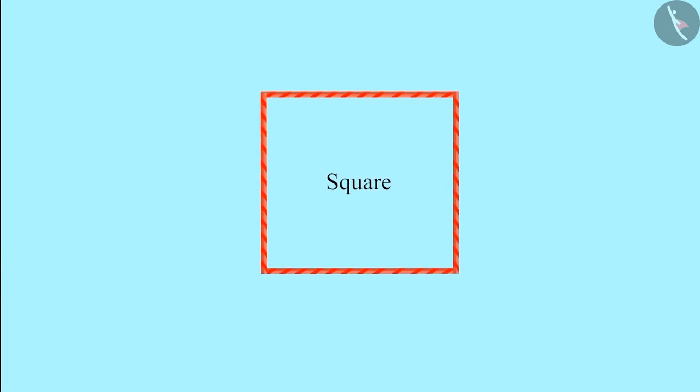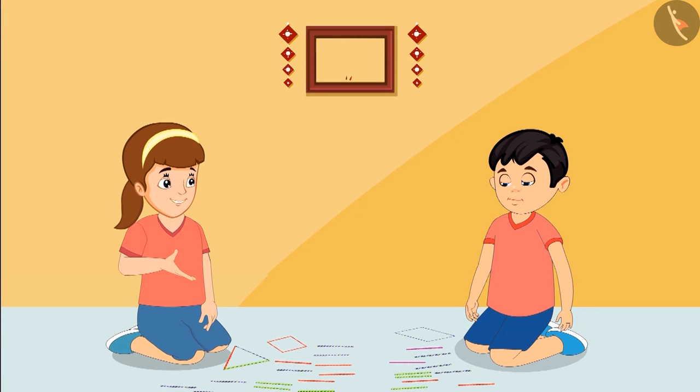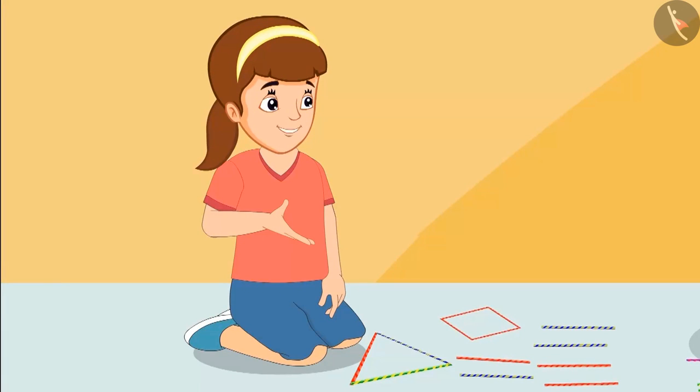Yes, this shape is also made of four straws. But the shape is made of four lines which are of the same length. So it is called a square. Okay. Fine, Chotu. I have understood.